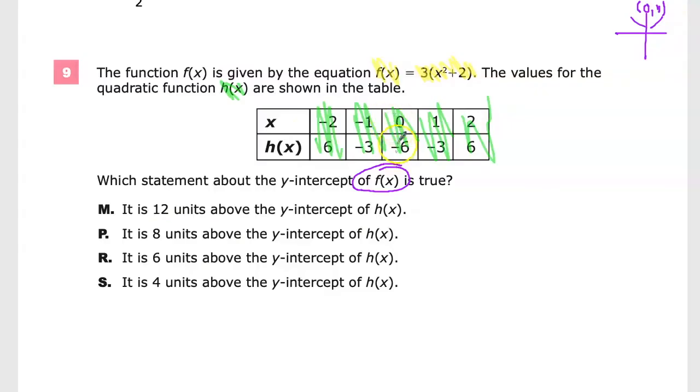So for h(x), I can see that when x is 0, the y, the h(x), is negative 6. So I may make a note to myself that h(x), the y-intercept, and I'm kind of an equal there but that's kind of a misleading statement, is negative 6. That's the y-intercept.